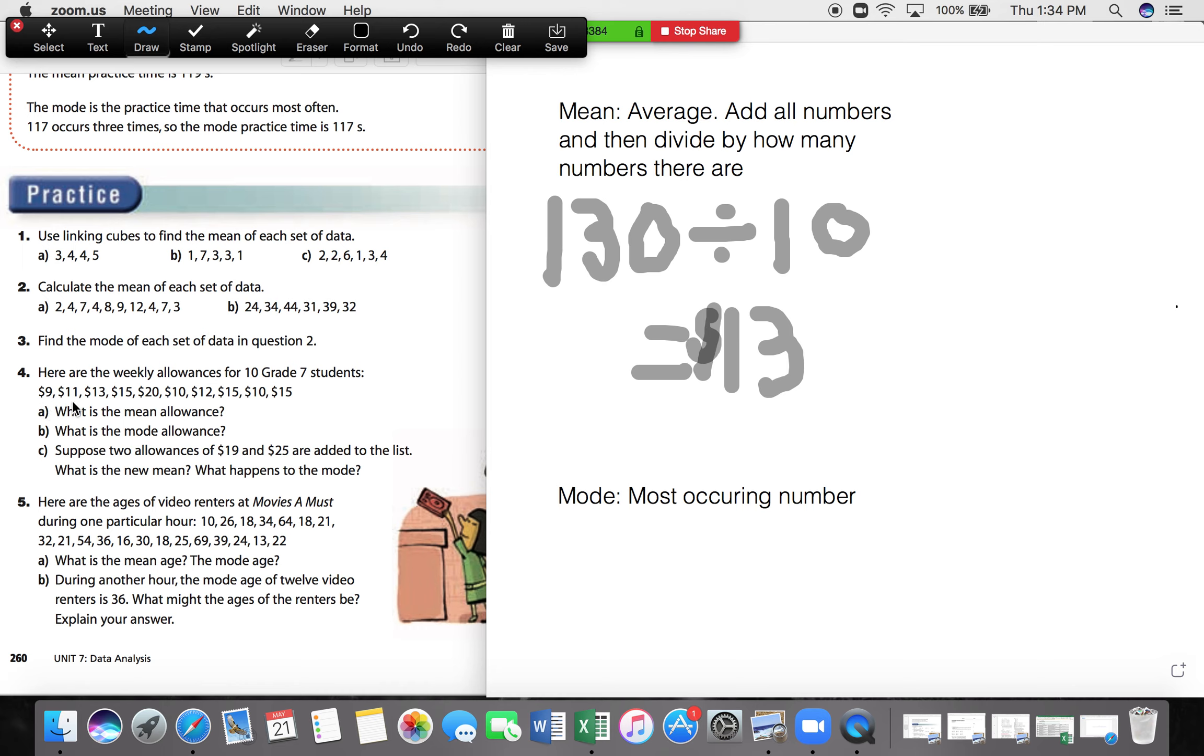We see one 9, we see one 11, there's one 13, there's one 15, one 20, there's one 10, there's only one 12. Oh, now we have two 15s, there's two 10s, and we see three 15s.